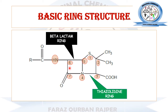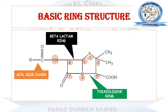At position one we have the sulfur; at position two we have the alkyl substitution — two methyl groups; at position three we have the carboxylic acid functional group; position four is the ring fusion portion of both rings; at position six we have the acyl amino side chain; and at position seven we have the carbonyl functional group.